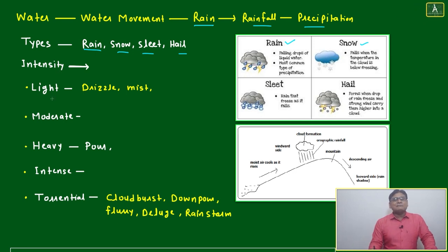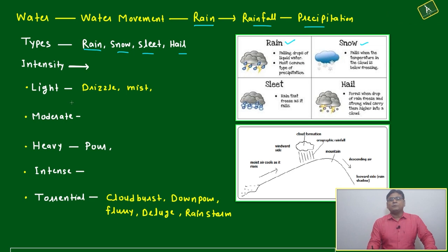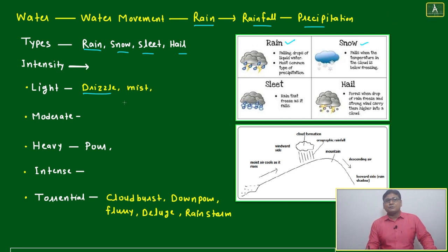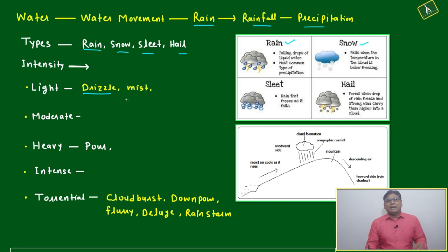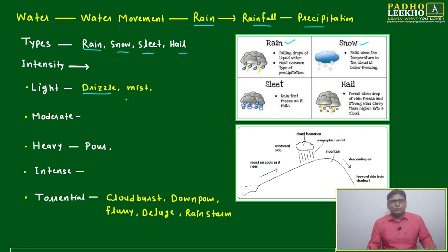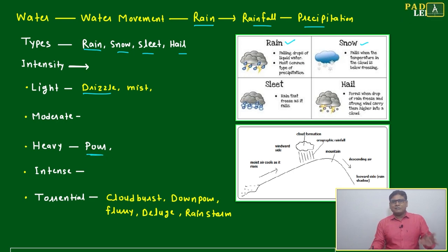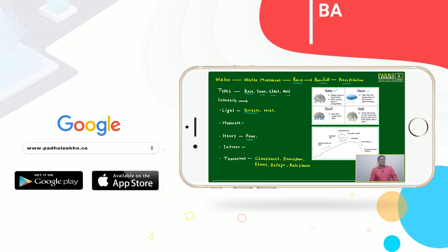Intensity-wise, you can also categorize rain. If it is very light rain, we call it a drizzle, or sometimes mist — like when you are planning to come out from home and rain has started, but you see outside it is drizzling and you think you can go out. Moderate rain is next, and then there are many words for heavy rain: intense rain, and again more words for that.